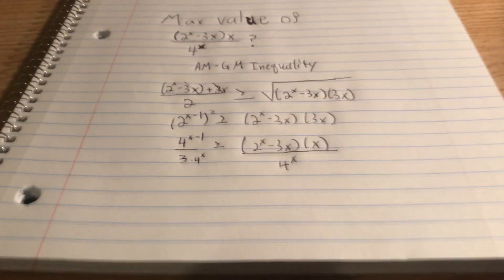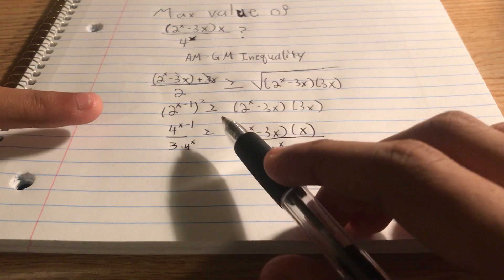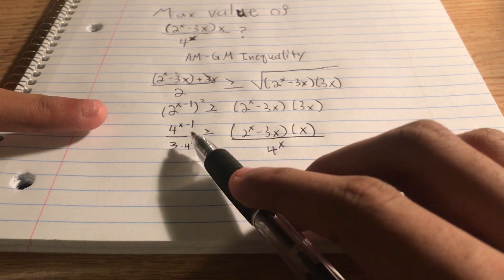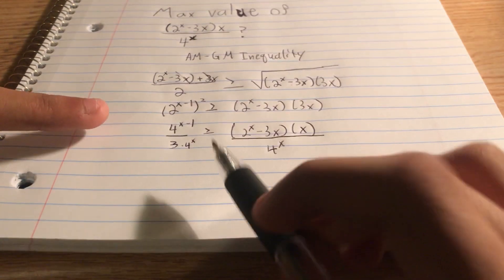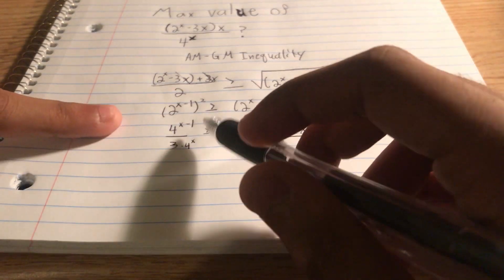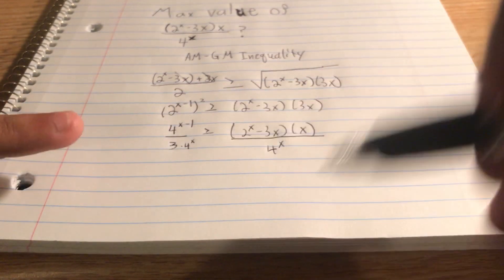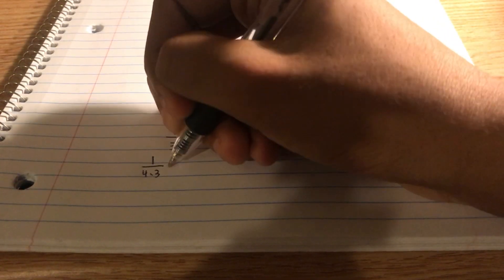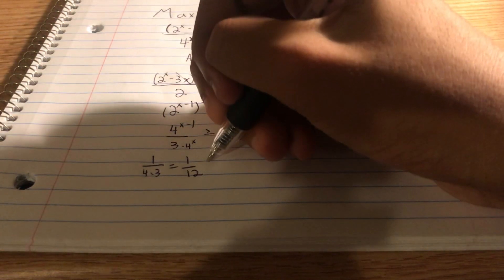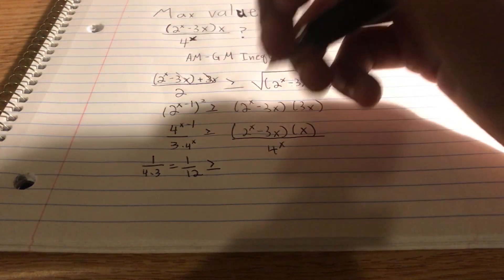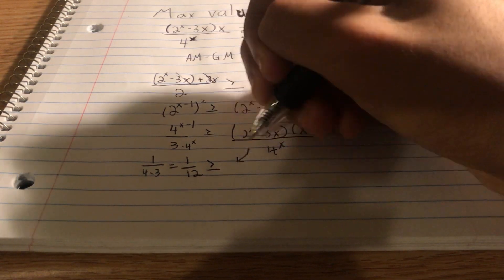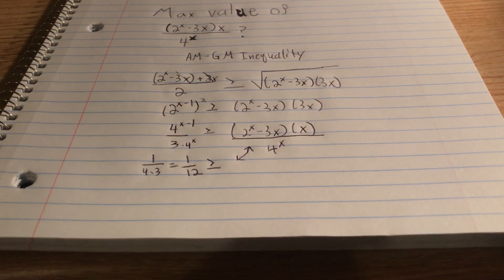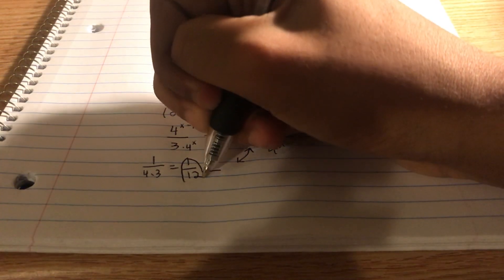Let's simplify this. 4 to the power of x minus 1 divided by 4 to the power of x. The two x's cancel out with each other, so you're left with 4 to the power of negative 1 divided by 3. Bringing the 4 to the power of negative 1 on the denominator, you get 1 over 4 times 3, which is 1 twelfth. And 1 twelfth, in the expression here, is greater than or equal to this function. And we have it. This is our maximum value.